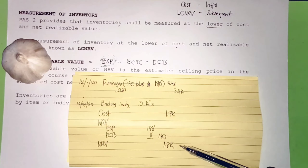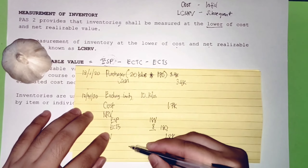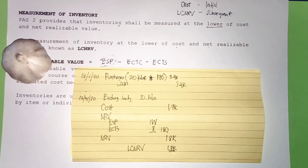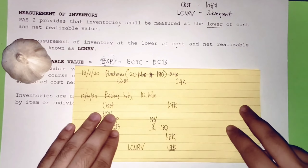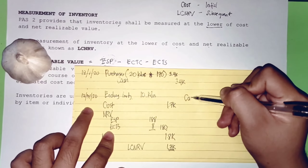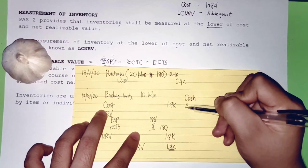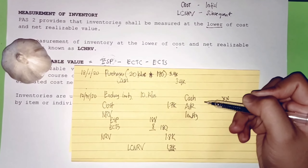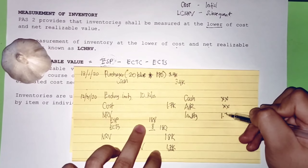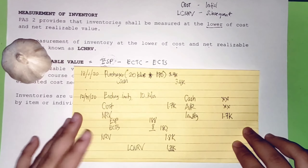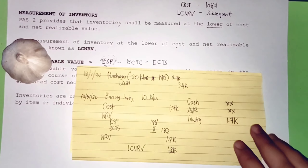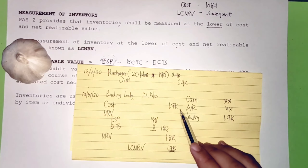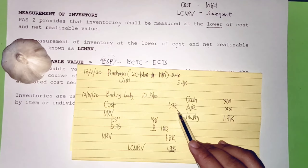Unlike the face shield example where NRV was lower, here the cost (₱1,700) is lower than NRV (₱1,800). So LCNRV = ₱1,700. On the December 31 balance sheet, after cash and accounts receivable, inventory appears at ₱1,700 — applying the conservatism principle, reporting at the lower of cost and NRV.